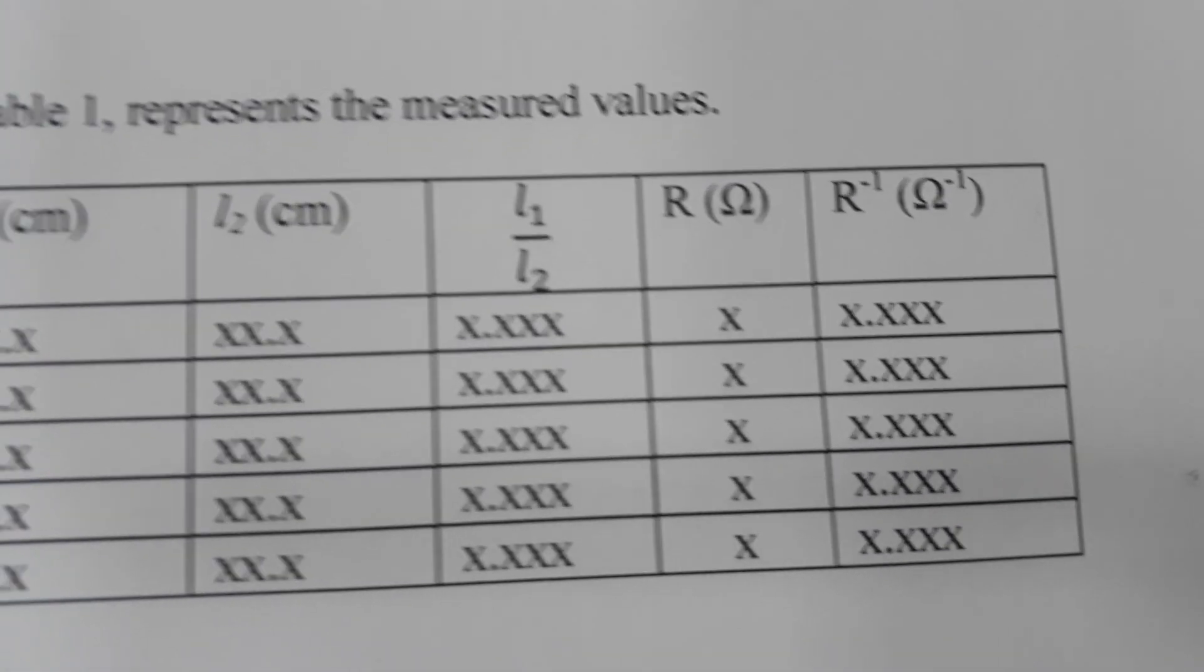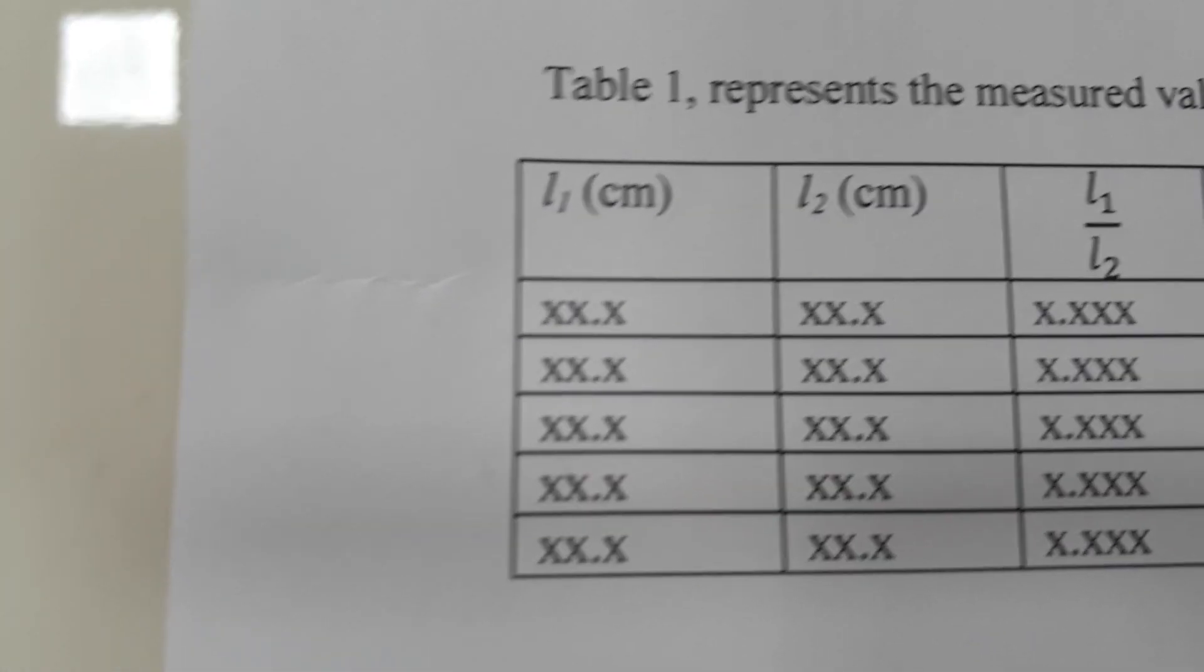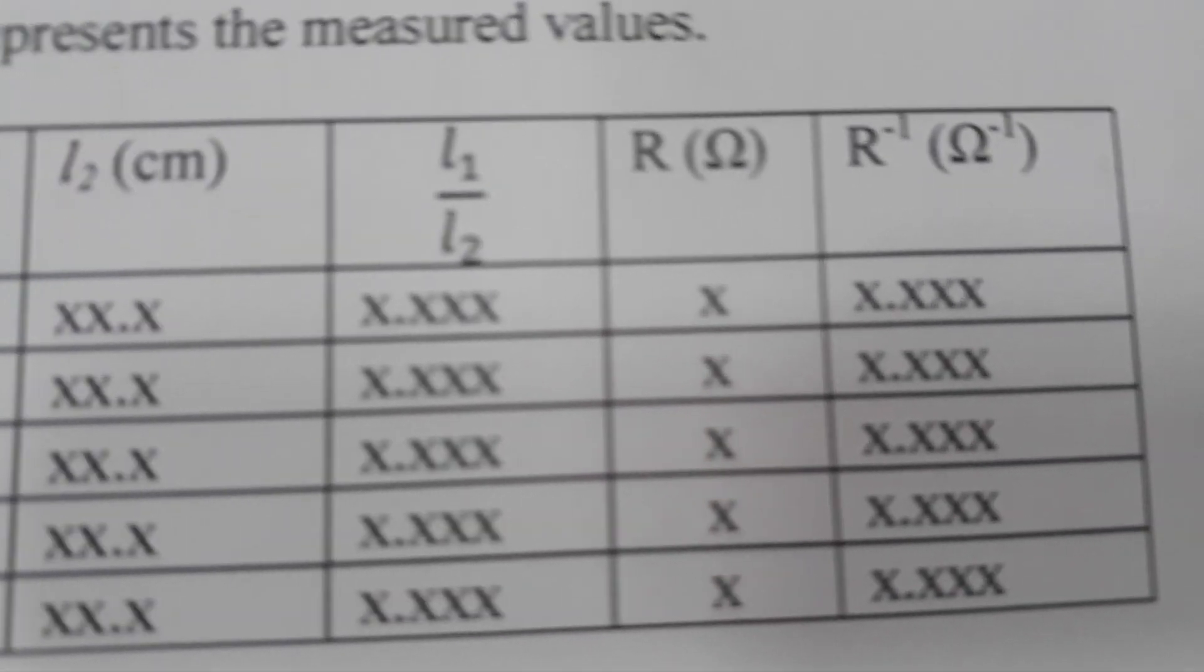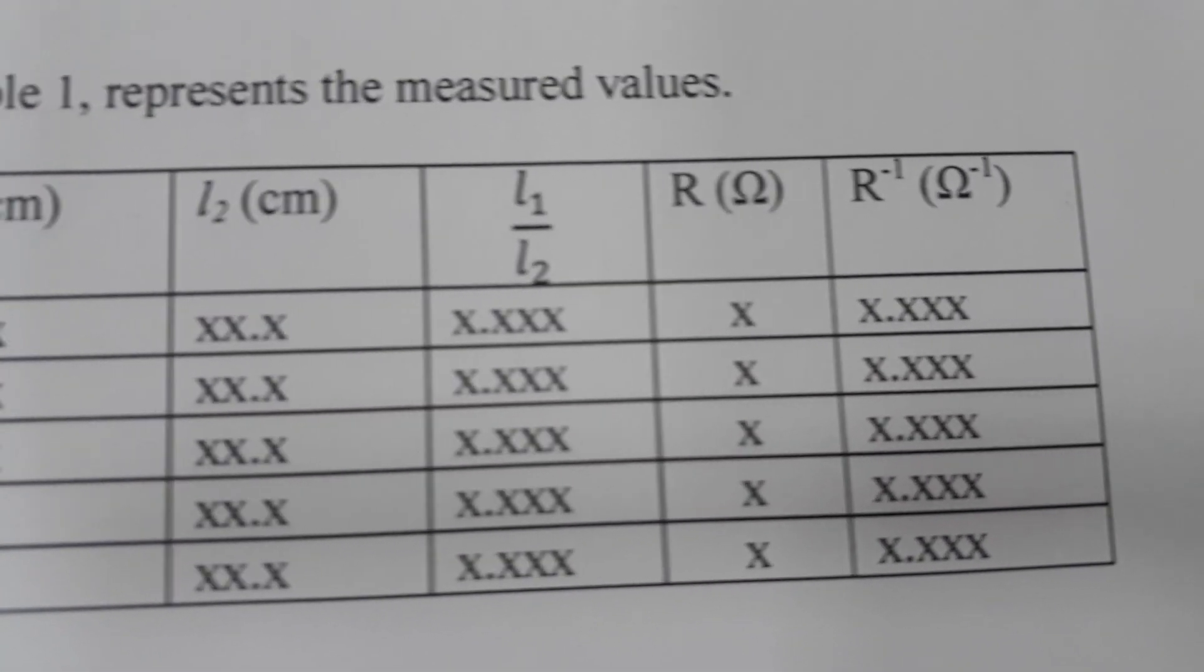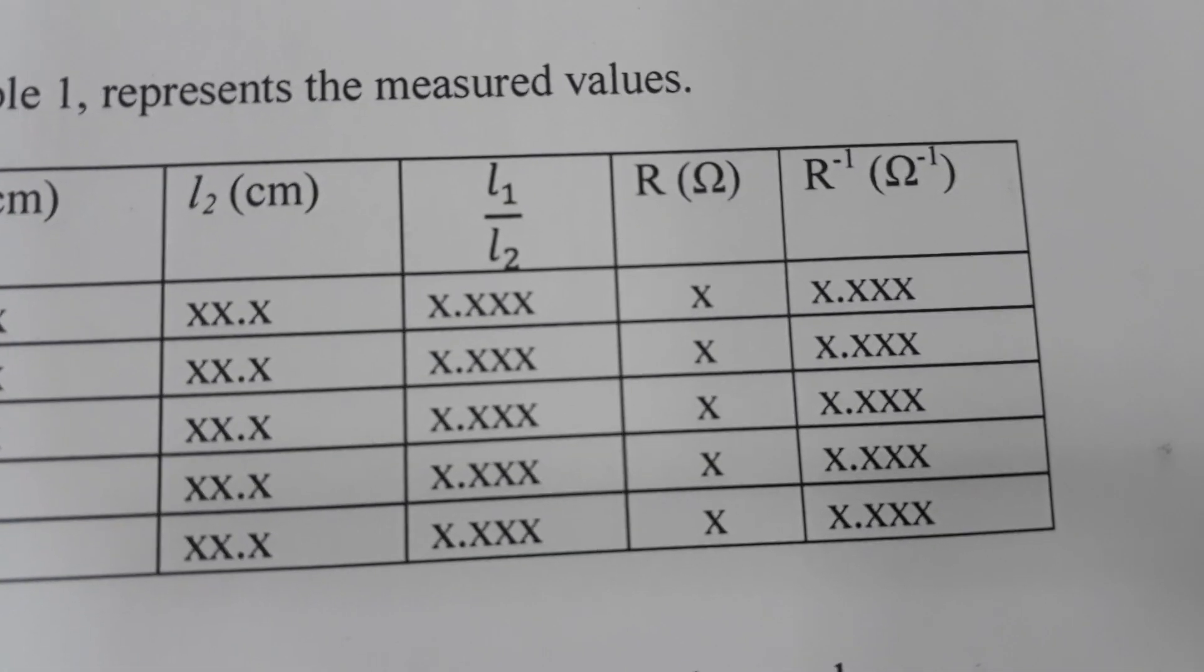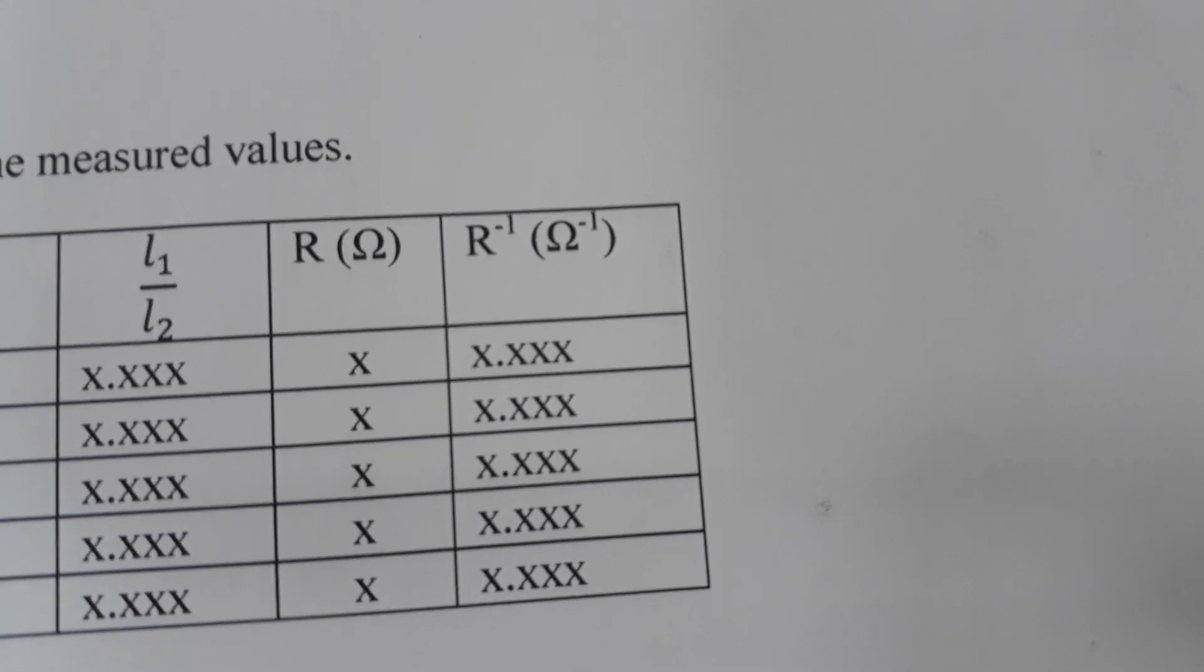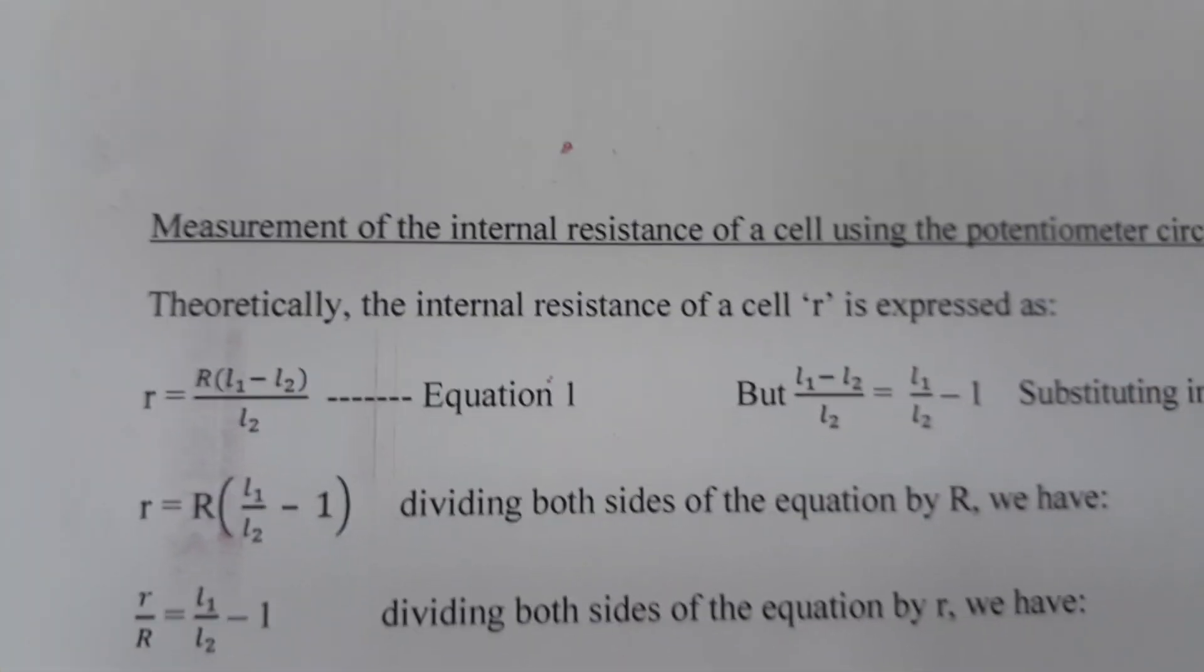While the derived or the calculated readings must be to three decimal points. You can see that I have my L1, my L2, then my L1 over L2, my R, and then the inverse of R, which is R raised to the power minus one.